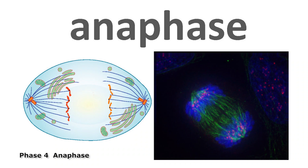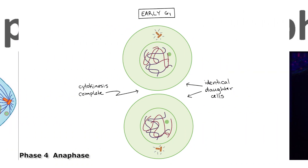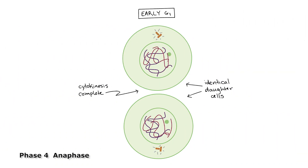Phase 4 is anaphase, when the sister chromatids form two sets of chromosomes as they are pulled apart by spindle fibers.